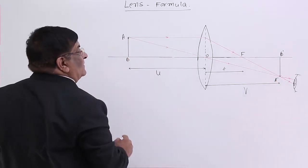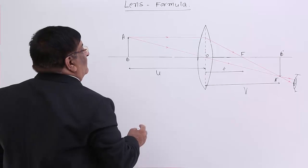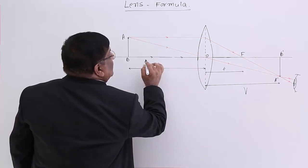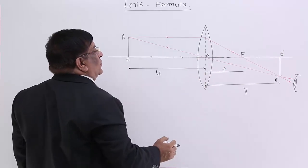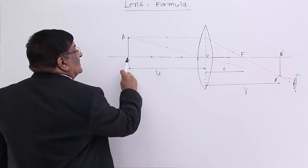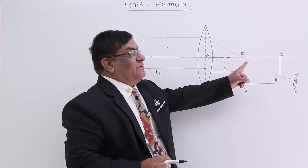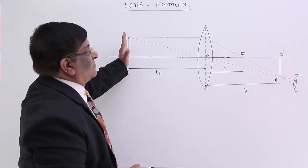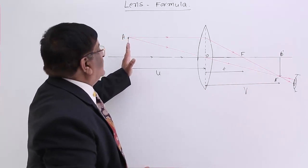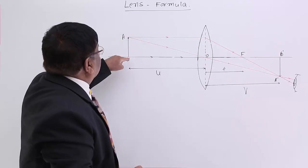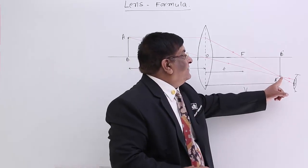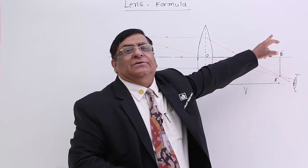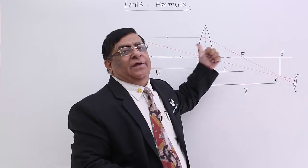From point B there will be a ray going along the principal axis straight, so the image of B will be on the principal axis. Since AB is perpendicular to the principal axis, we drop a perpendicular from A' to get A'B', which is the image of AB.